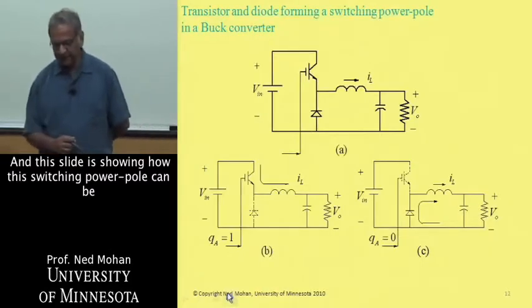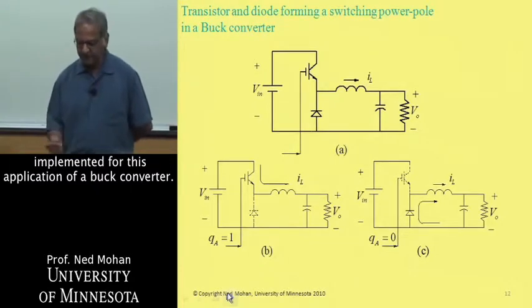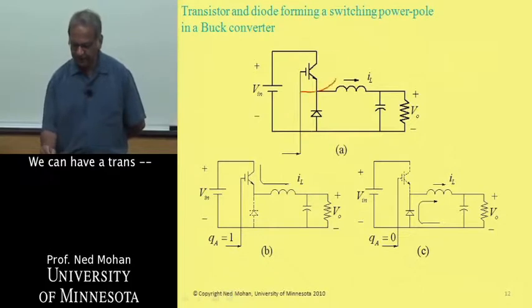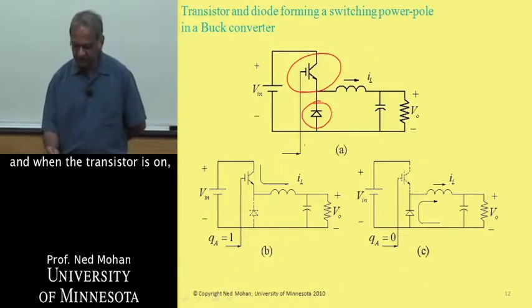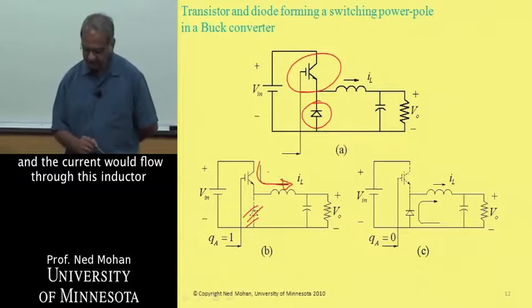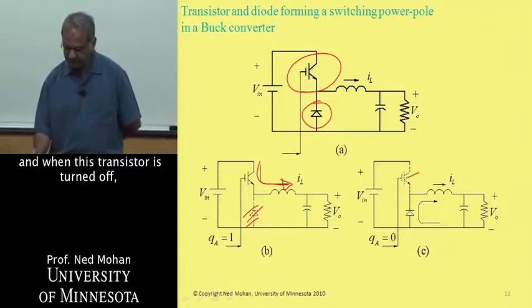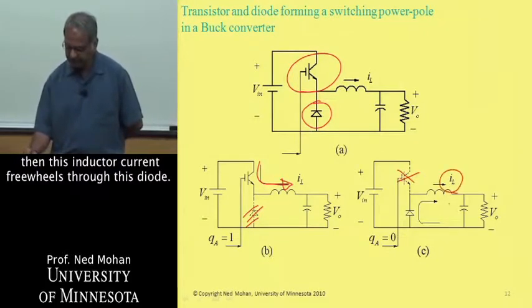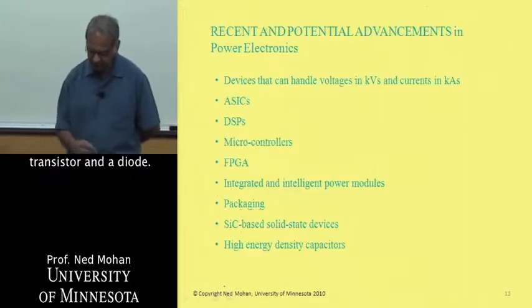And this slide is showing how this switching power pole can be implemented for this application of a buck converter. We can have a transistor here and a diode like this, and when the transistor is on, this buck converter is reverse biased, and the current would flow through this inductor in this direction through the transistor. And when this transistor is turned off, then this inductor current freewheels through this diode. So this bipositional switch can be implemented using a transistor and a diode.